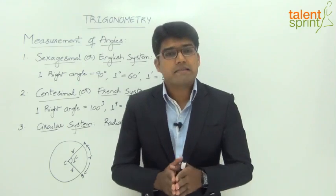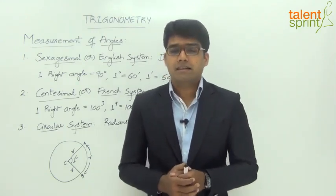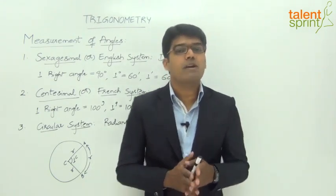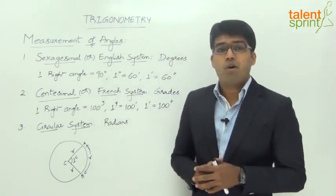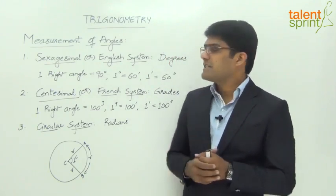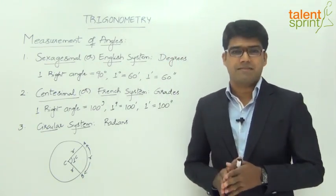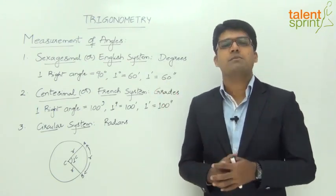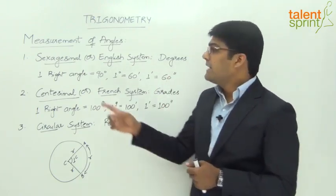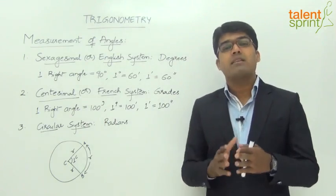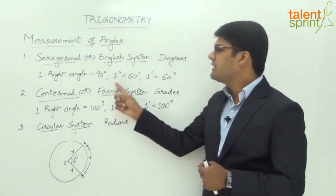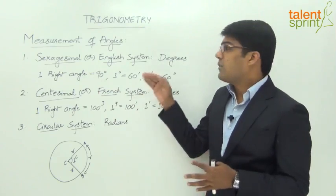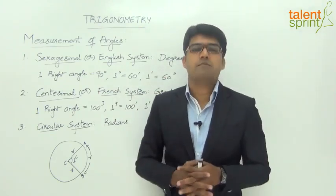Before we learn about the various trigonometric functions and their identities, let us look at the different systems through which we can measure an angle. There are three different systems of measurement of an angle. The first one is the sexagesimal or English system. In this system the angle is measured in terms of degrees, where one right angle is equal to 90 degrees, each degree is split into 60 minutes, and each minute is equal to 60 seconds.